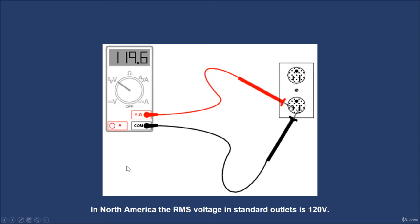For example, in North America, the peak voltage provided by the outlet is 170V, and when you check it with your multimeter, you will see the value of 120V.